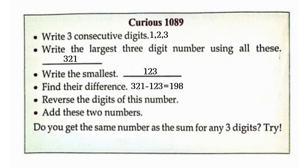Reverse the digits of this number: 891. Add these two numbers. 198 plus 891 is equal to 1089.